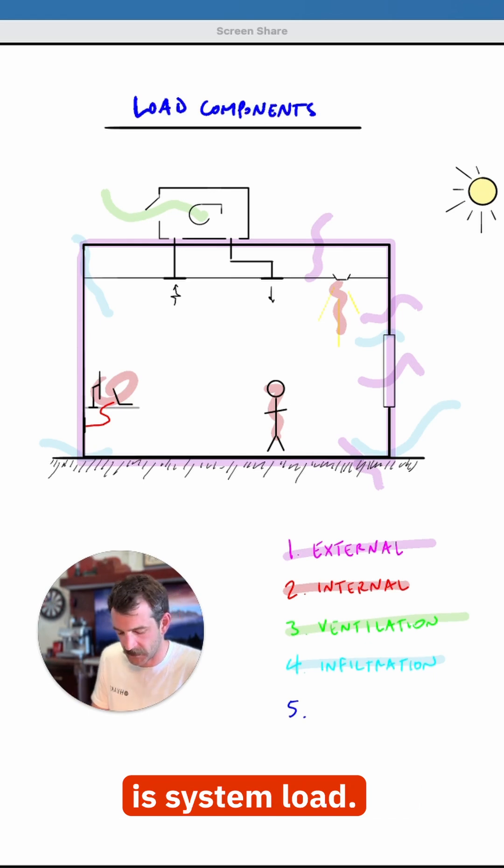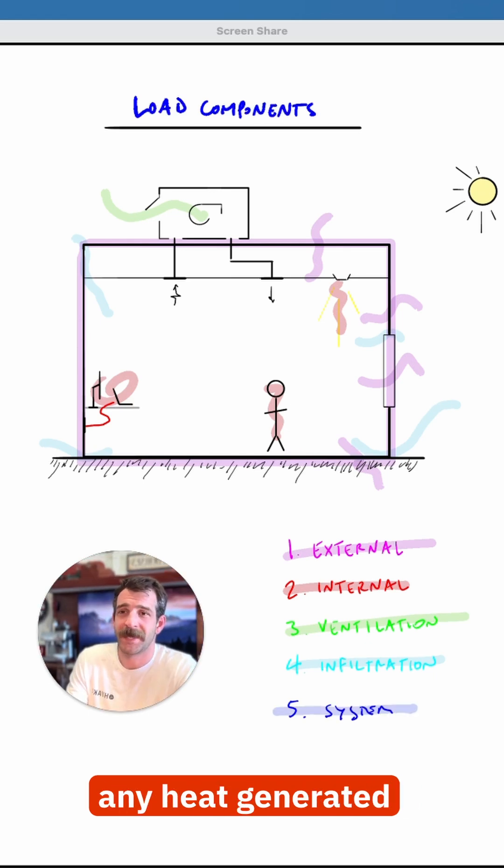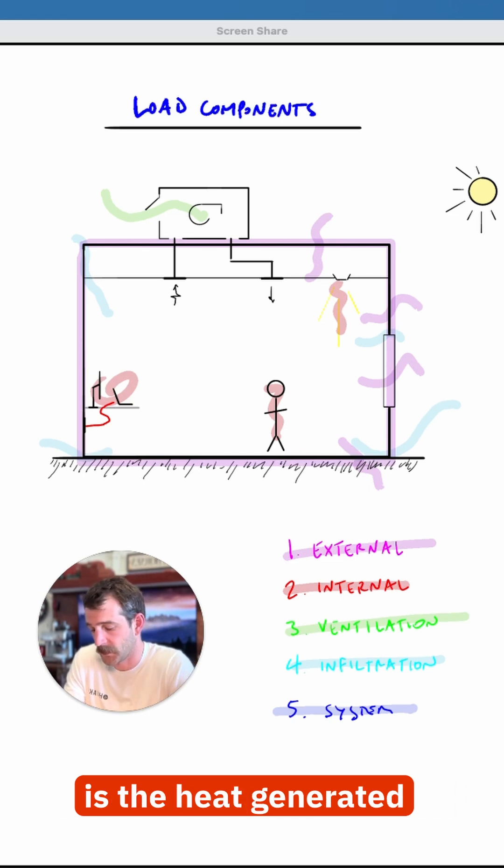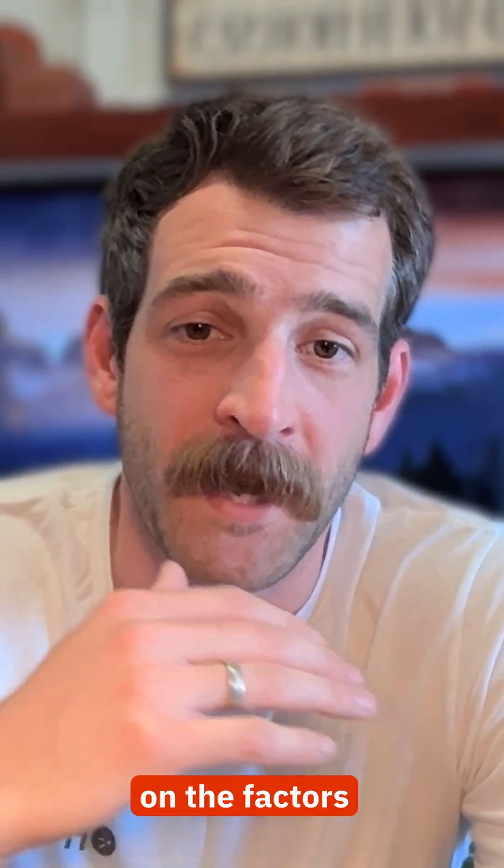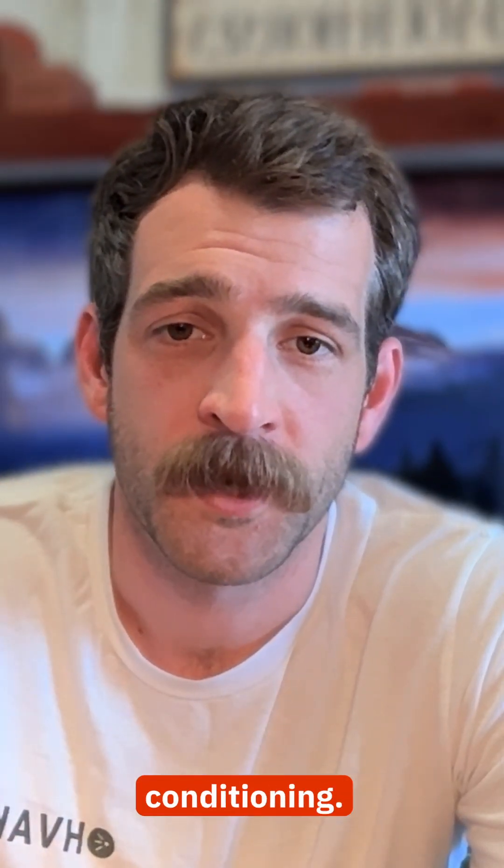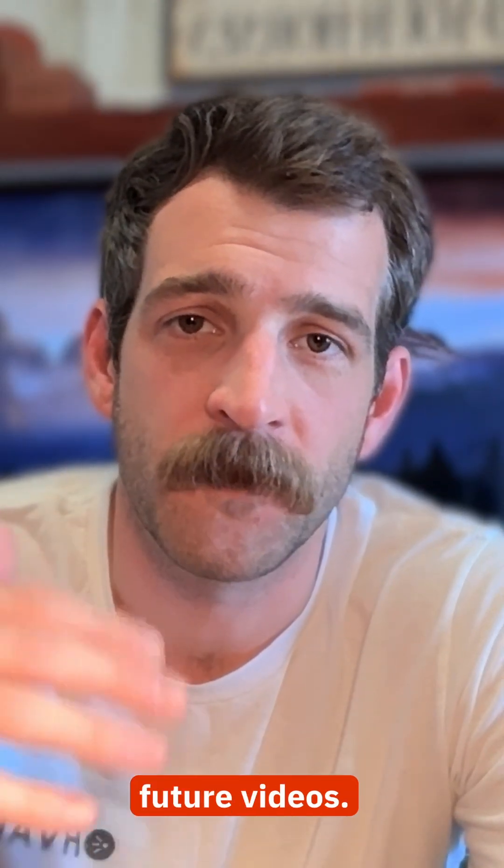And honorable mention, number five is system load. System load is any heat generated by your HVAC system itself. The most common example is the heat generated from the fan that's distributing your air. It's actually adding heat to your airstream. That's a quick breakdown on the factors that contribute to air conditioning. I'll expand on each one in future videos.